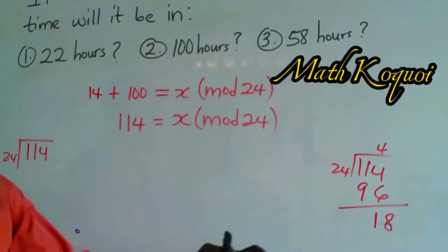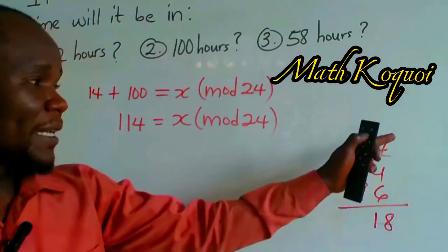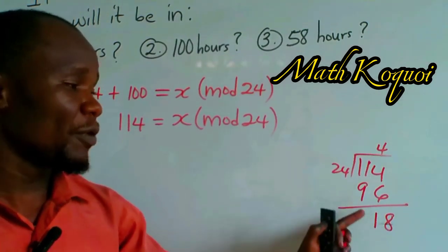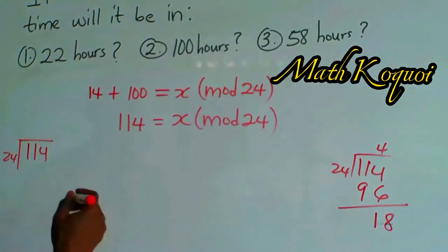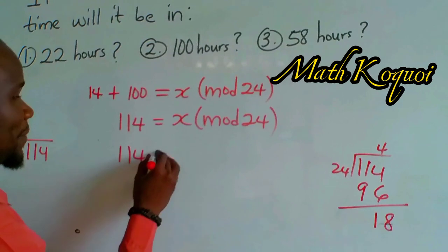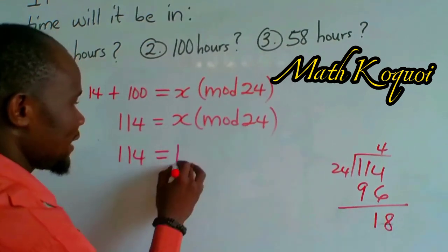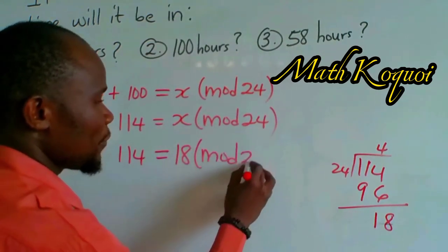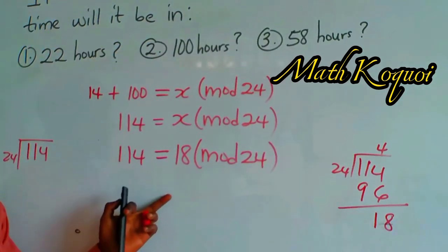It means that we will have 18 here. 24 going into 114, 4 times, and the remainder is 18. So we can say 114 is equal to 18 mod 24.